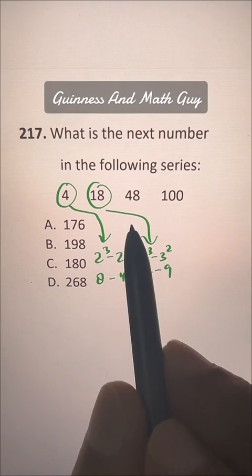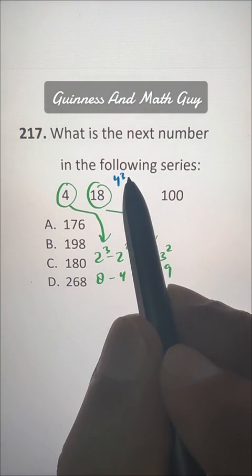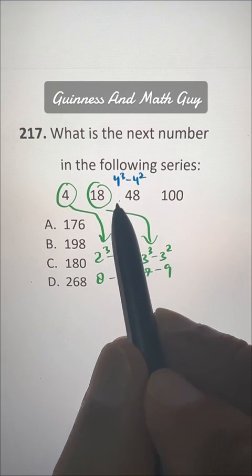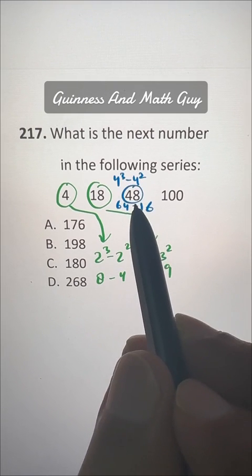Now we have to do 4 cubed minus 4 squared. 4 cubed is 64, 4 squared is 16. That is 48.